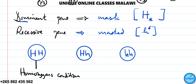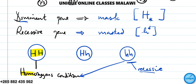Homo means the same. So a homozygous condition is a pair of similar genes controlling a character. We have a homozygous dominant condition — a combination of two dominant genes — and a homozygous recessive condition — a combination of two recessive genes, which are also similar.